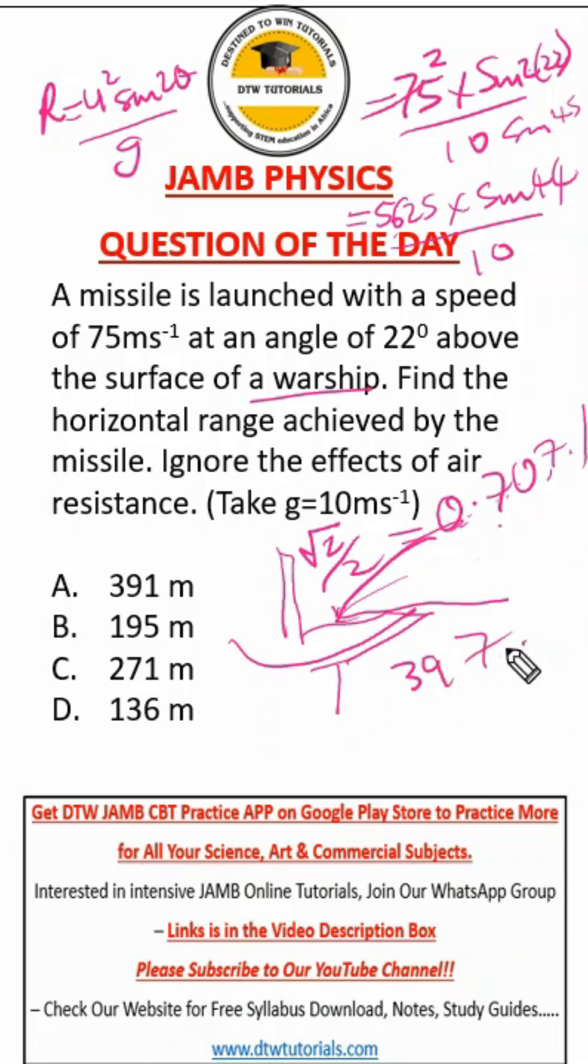What is closest to the answer? Are you with me? If you have a scientific calculator, when you find the sine of 44, you are going to get 0.6947, which is a little bit lower from this. When you multiply it by this and divide by 10, you are going to get, when you approximate, 391 meters.